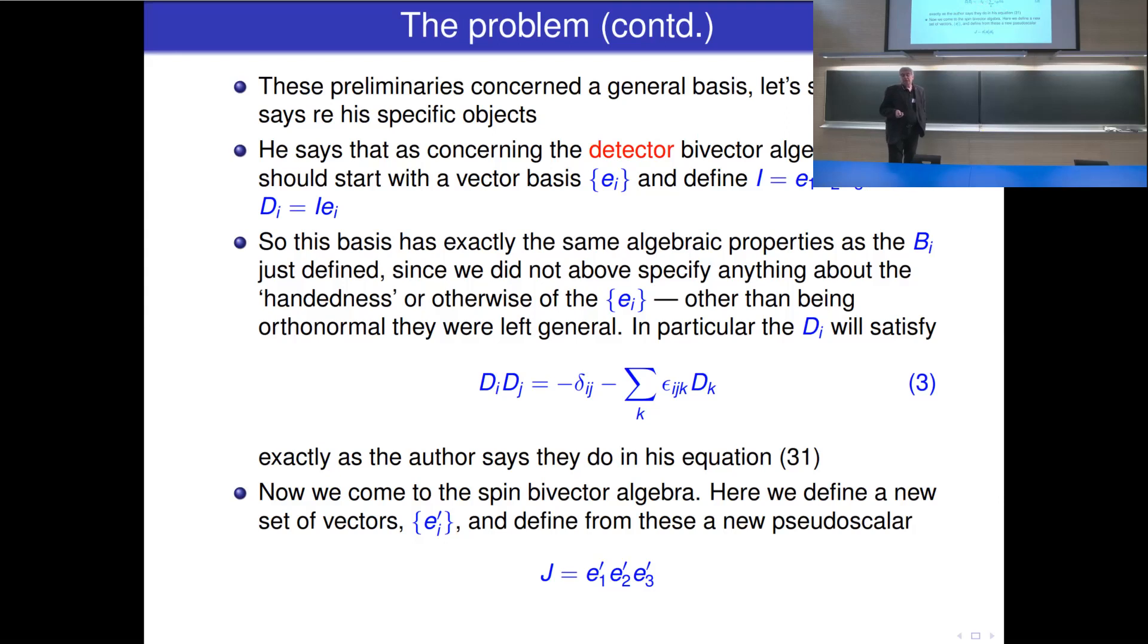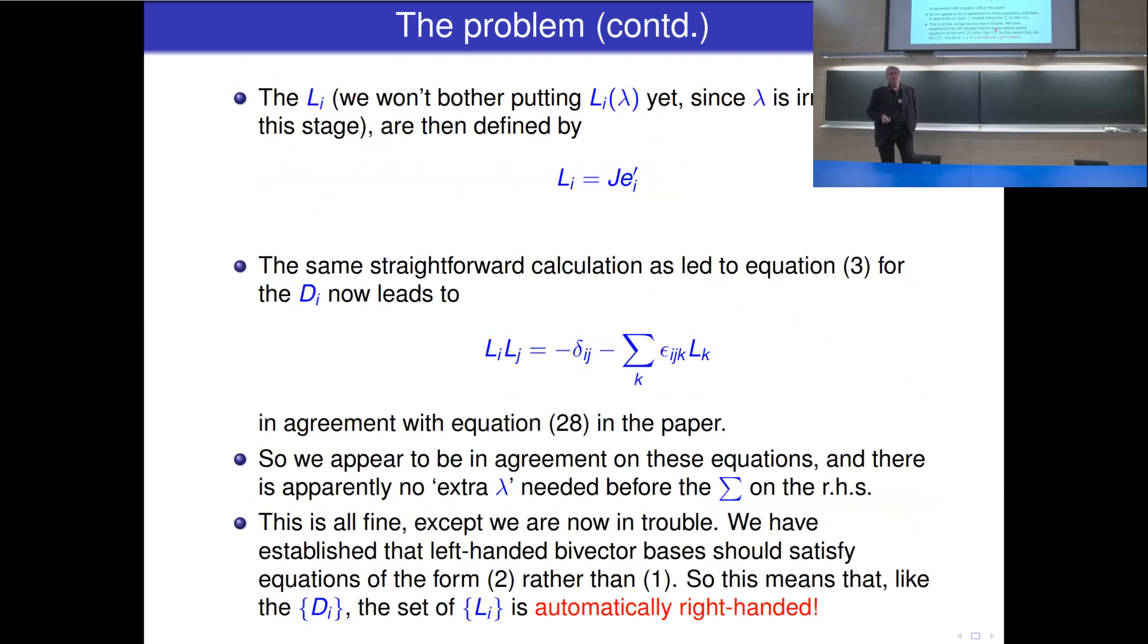Now let's go to the spin bivector algebra. Here we have a new set of vectors, the e i dashed. From these, we define a new pseudoscalar like this. Let's call it J. And then the l i formed from that. We get l i is J e i dashed. And of course, the same straightforward calculation that led to equation 3 for the d i now leads to this for the l i. So all this is in agreement with the equations of the paper. No problem with that. And there's apparently no lambda in here. This is all fine, except, of course, we're now in trouble.